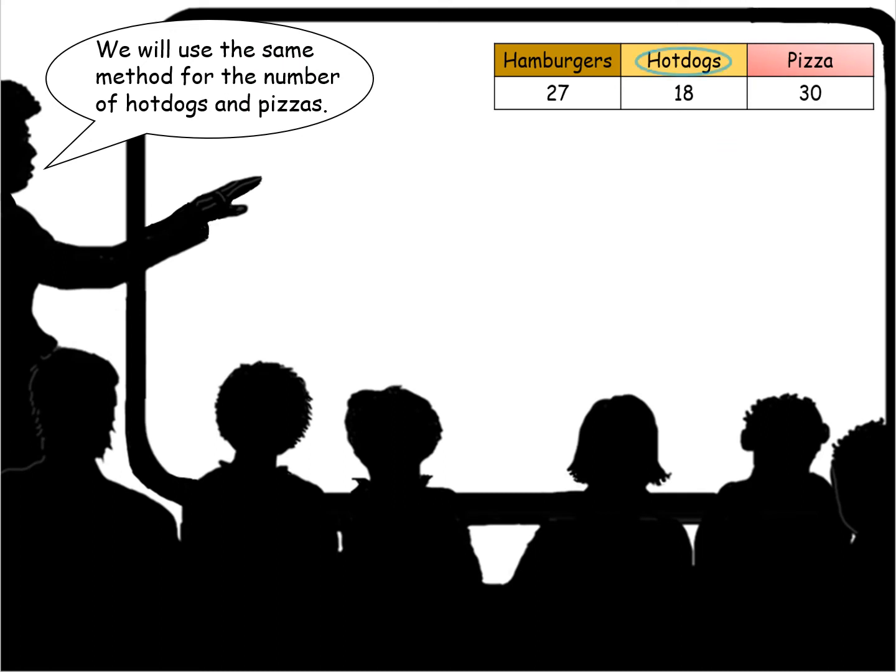We'll use the same method for the number of hot dogs and pizzas. So we're going to look at hot dogs first. We set up our ratio: 18 out of the 75, 75 being our total sample size, and we equate that to x over 180. How many out of 180? We get 18 times 180 is 3,240, which equals 75x. We divide by 75 on both sides, we get 43 hot dogs.